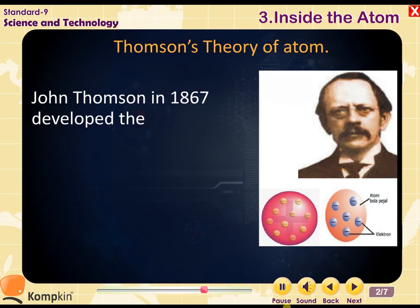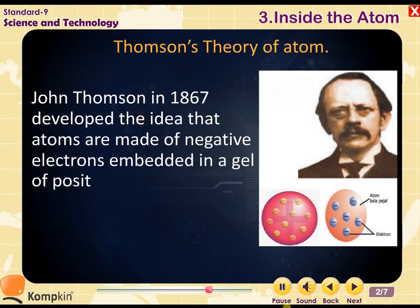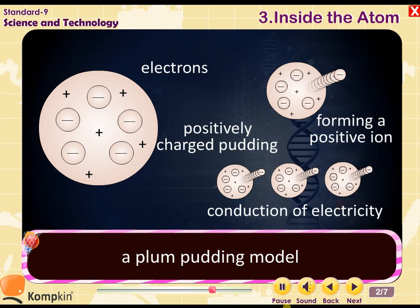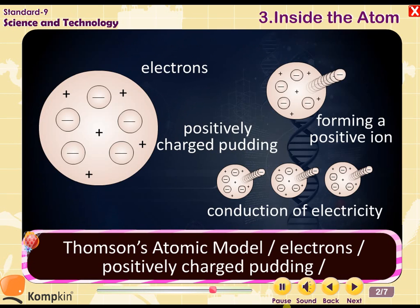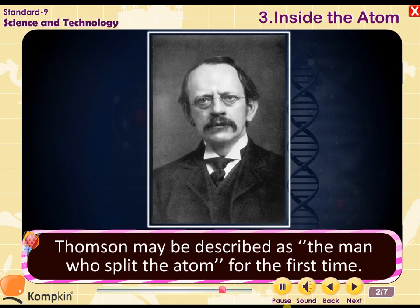Thomson's theory of the atom: John Thomson, in 1897, developed the idea that atoms are made of negative electrons embedded in a gel of positive charge, known as the plum pudding model.